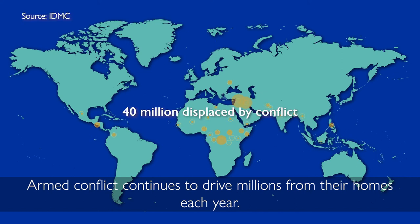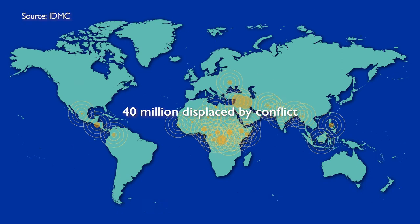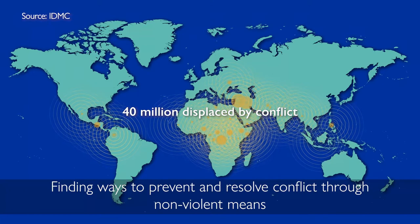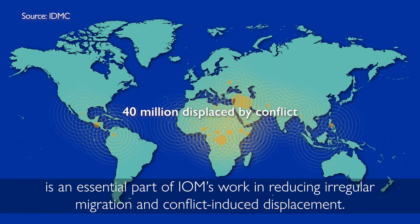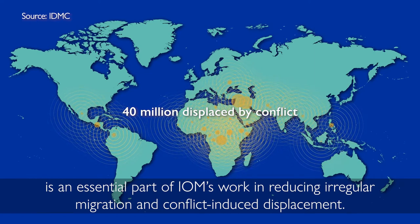Armed conflict continues to drive millions from their homes every year. Finding ways to prevent and resolve conflict through non-violent means is an essential part of IOM's work in reducing irregular migration and conflict-induced displacement.